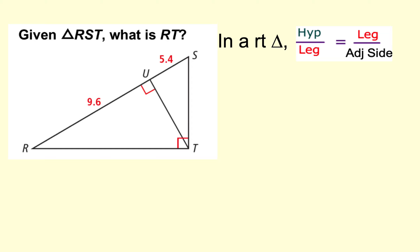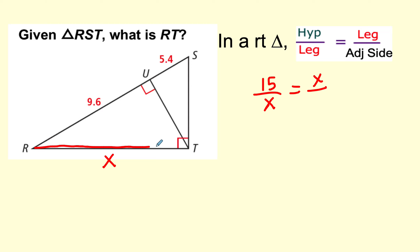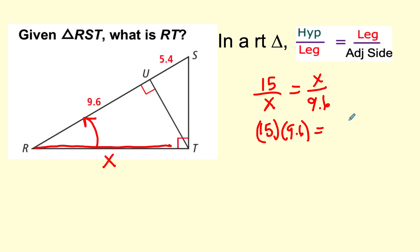Let's use this theorem to help us solve for RT. RT, which we'll call X, is a leg. So the whole hypotenuse — adding the two parts together — would be 15. We set up: the leg X is the geometric mean, and the adjacent side is 9.6. So 15 times 9.6 equals X squared.